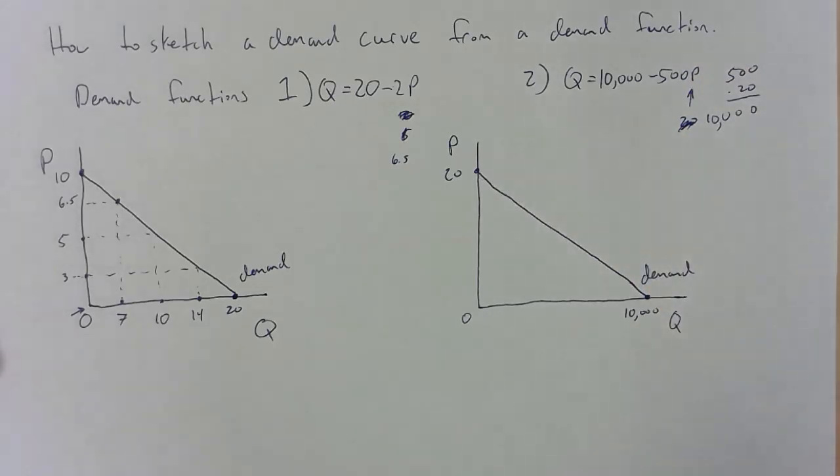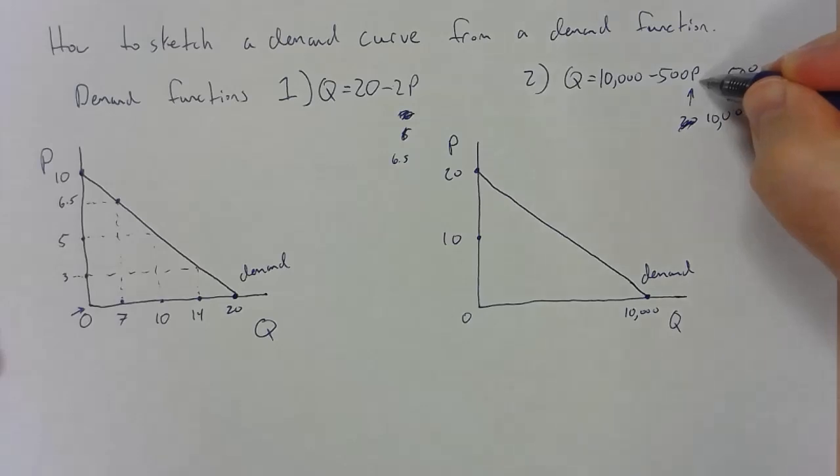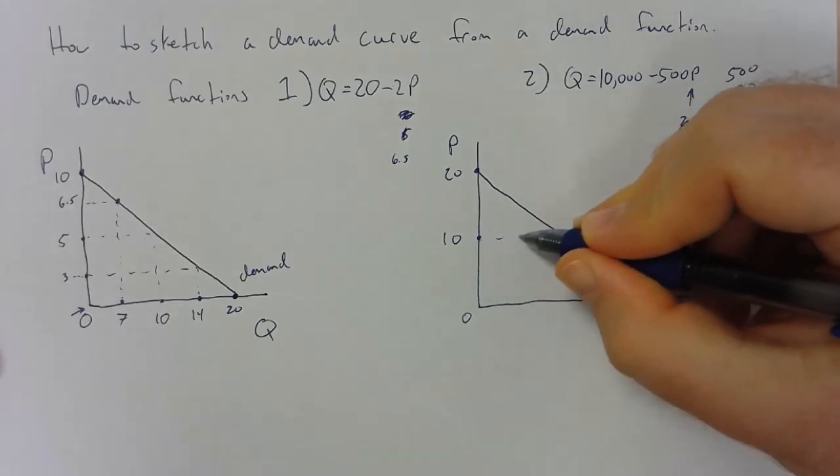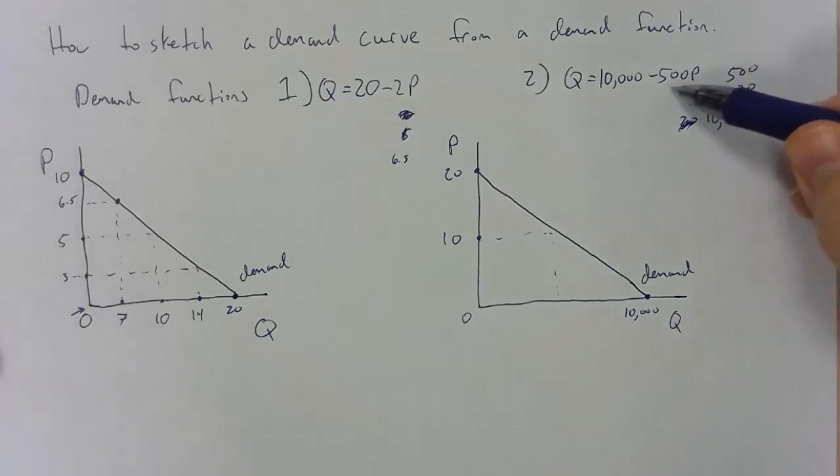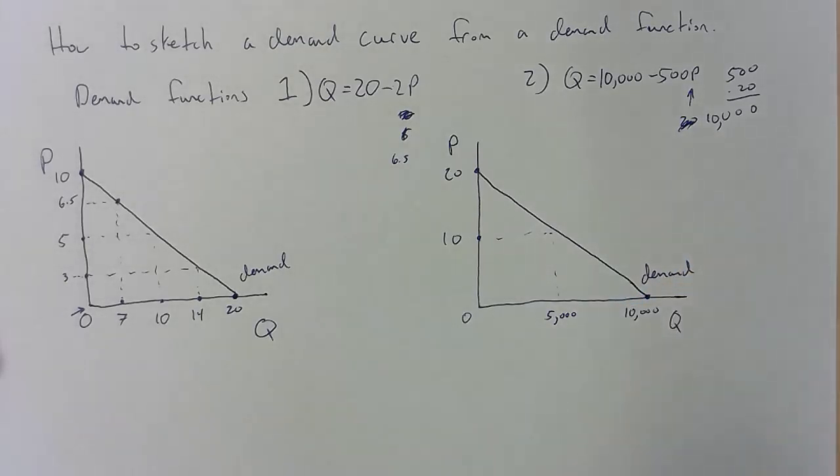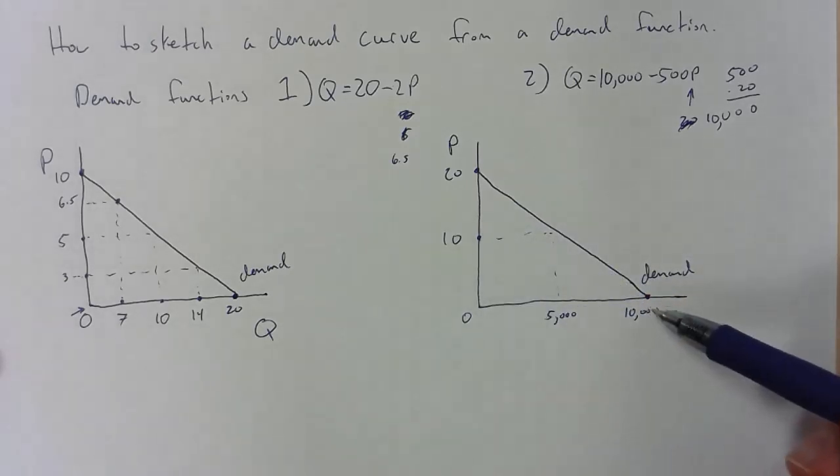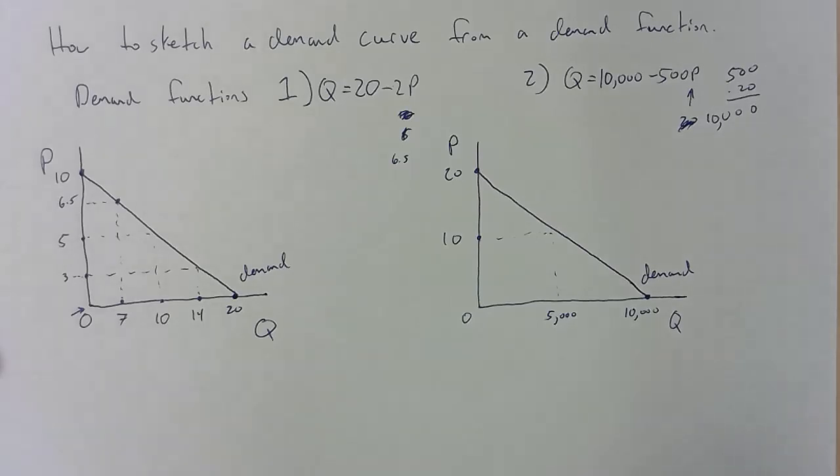We could then go through the same process as before. We could plug in a random price, plug in our random price to our demand function. So if we choose a price of 10, what would quantity end up being? 500 times 10 gives us 5,000. So we would end up seeing a quantity of 5,000. You could repeat this process for any of the values. Just choose any random p, try to figure out what quantity demanded will be. You can use your demand function right there.